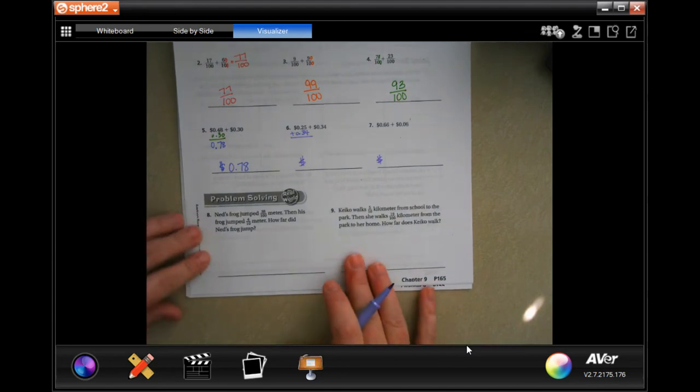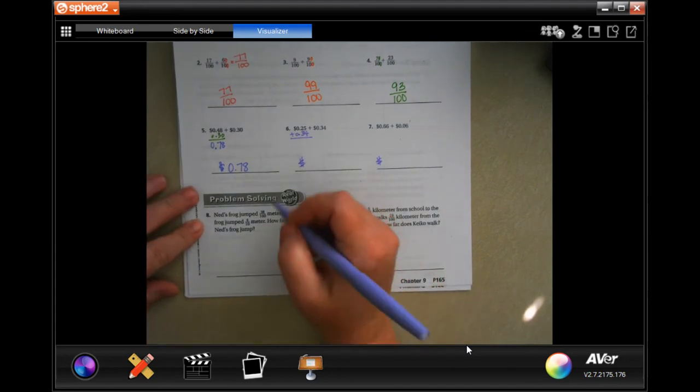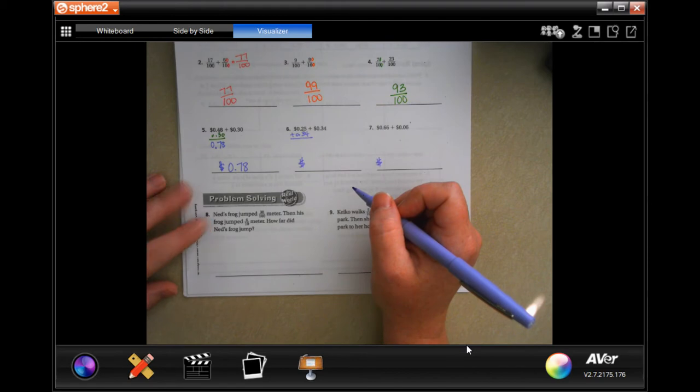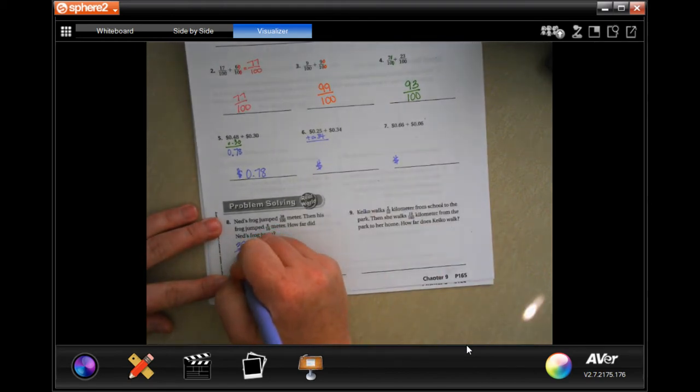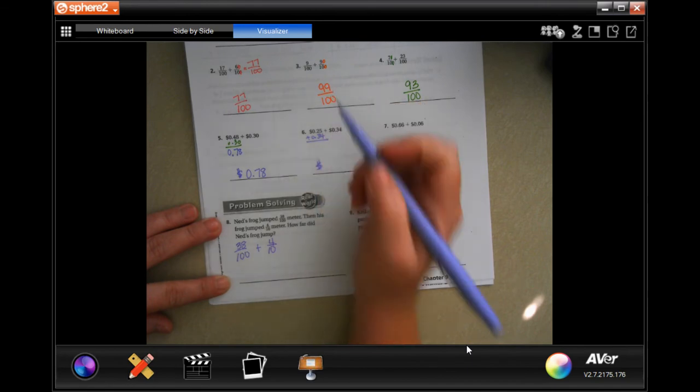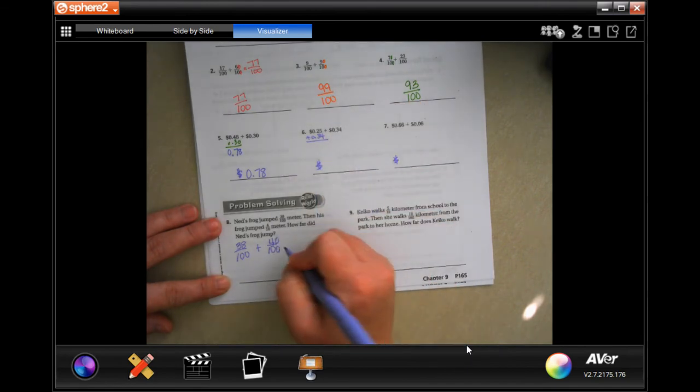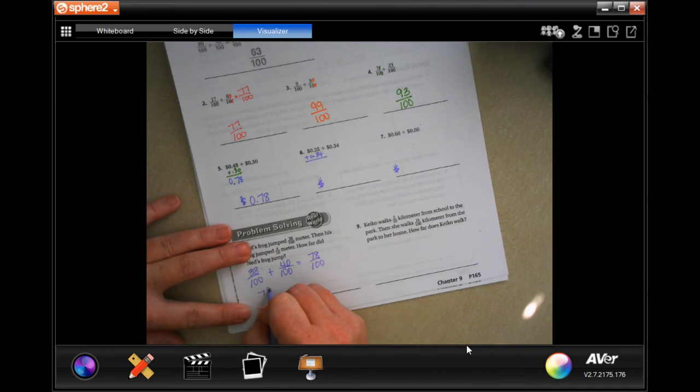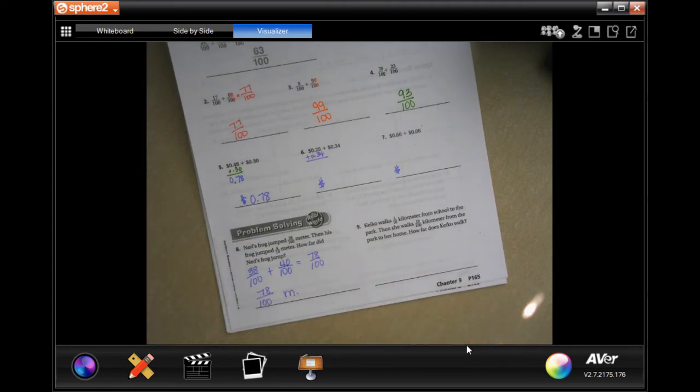So, we're going to go down to number 8 and it says Ned's frog jumped 38 hundredths of a meter, sorry. Then his frog jumped 4 tenths of a meter. How far did Ned's frog jump? So, they're just saying 38 over 100 plus 4 over 10. We're going to do the same thing that we did up here and we're going to add a 0 to this and add a 0 to this. So, now 38 plus 40 is 78 and we're going to keep our denominator. So, 78 hundredths and that's being measured in meters.